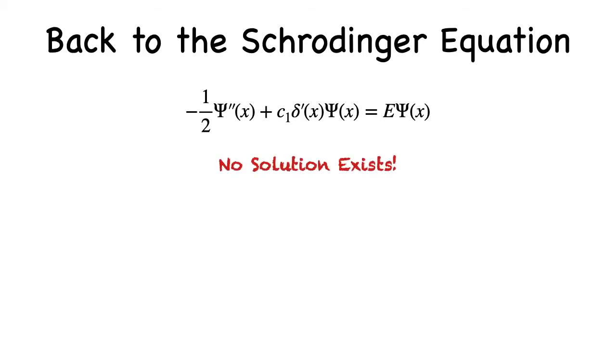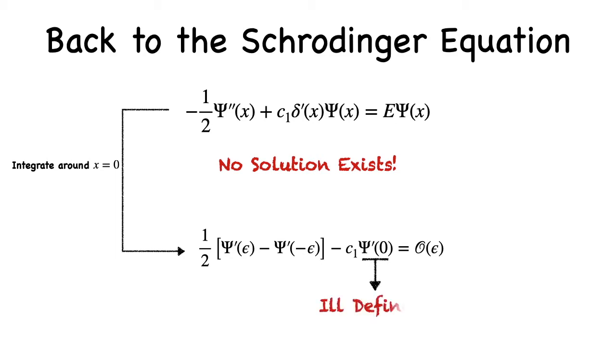To see how this is, we can integrate the equation over space around x equals zero, obtain the following difference equation, and we would normally impose continuity and jump conditions to then go and infer our amplitudes. The issue is that psi prime at zero is ill-defined because it's discontinuous there.